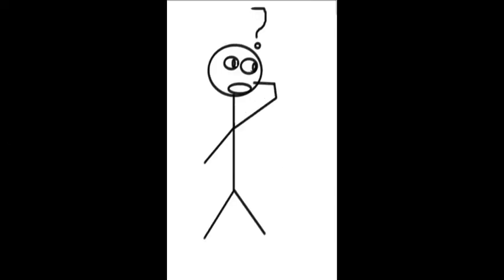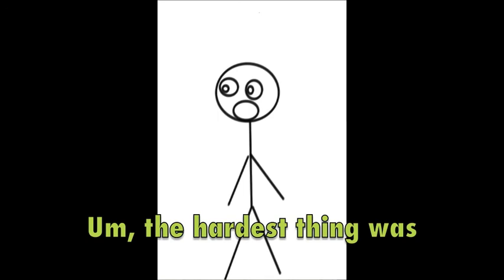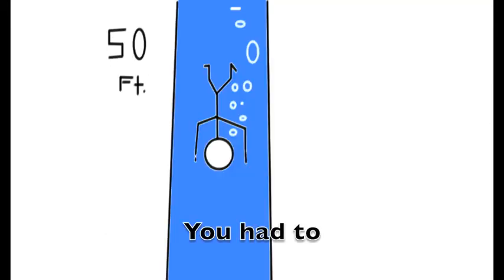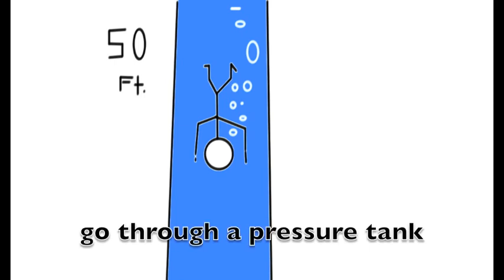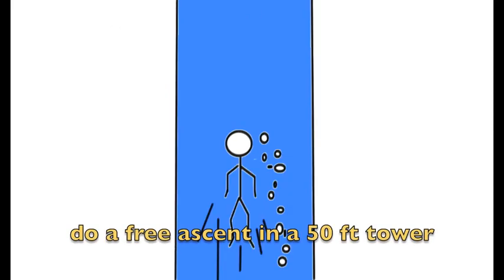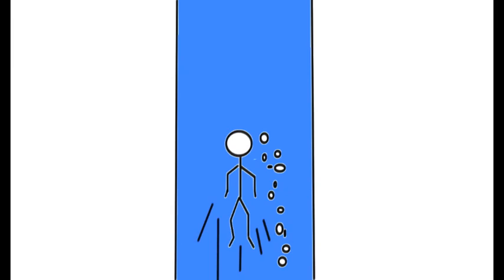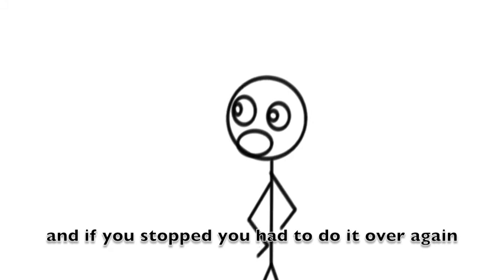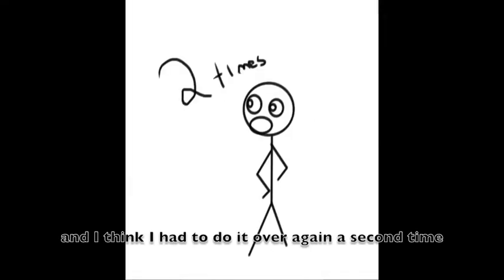What was the toughest moment you've had when you were in the service? The hardest thing was passing the entrance requirements for submarines. We had to go through a pressure tank and also we had to do a free ascent in a 50-foot tower. And you had to exhale all the way up in that tower. And if you stopped then you had to do it over again. And I think I had to do it over a second time.